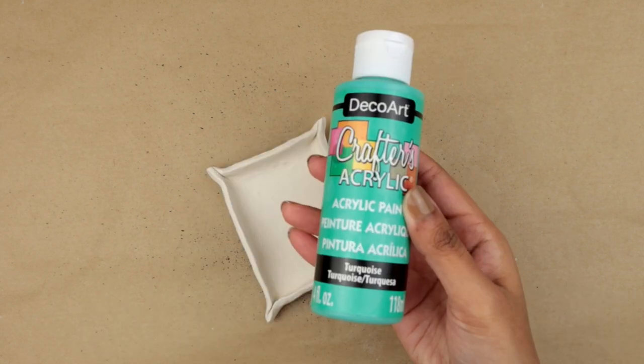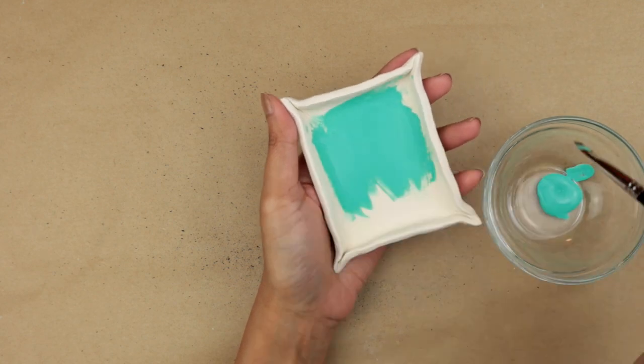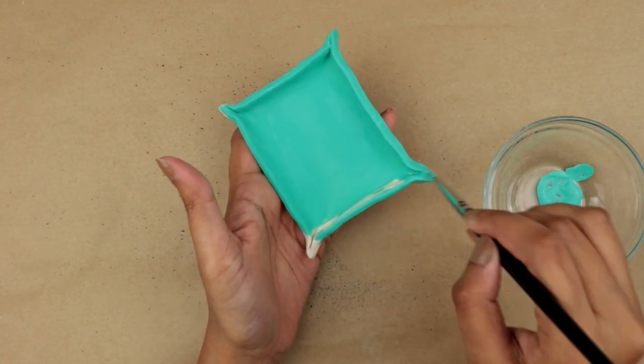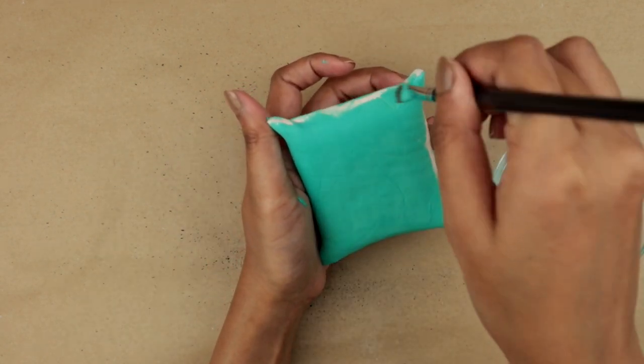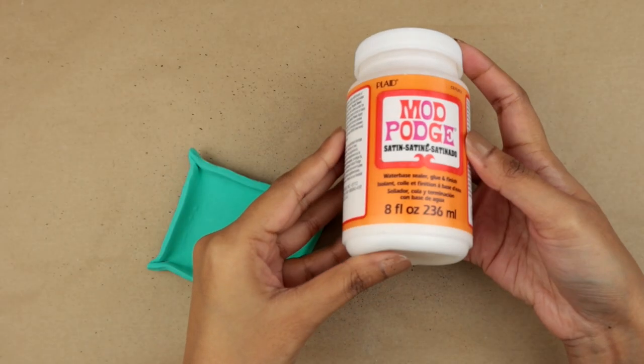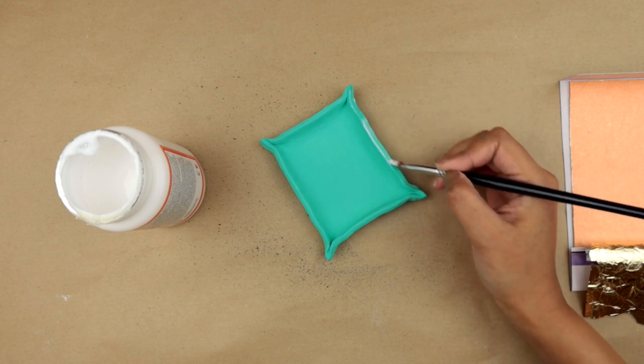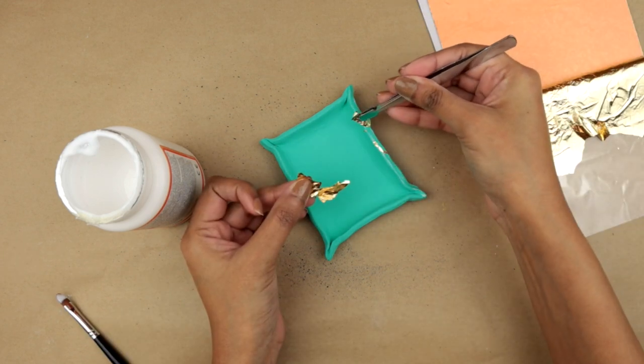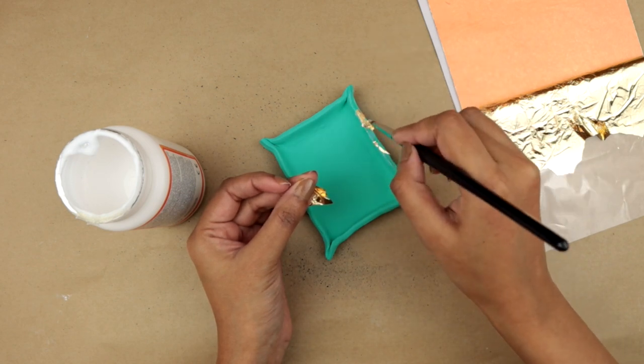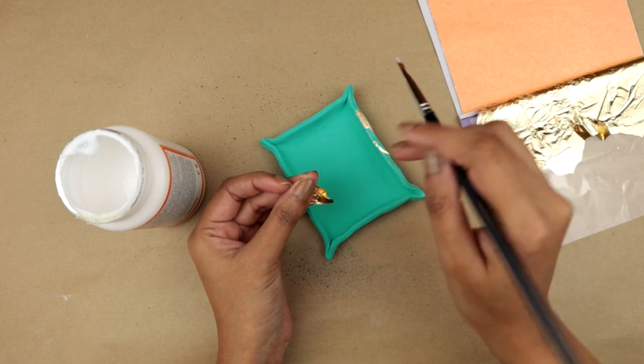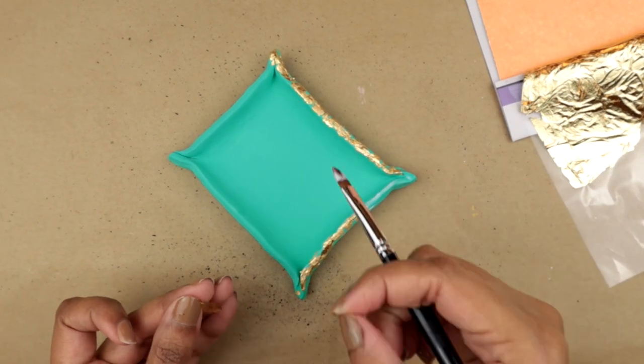I am grabbing the next piece and first I am going to paint it with this turquoise acrylic color. I went for a single coat and then I'm flipping it over and painting the back of it. After the paint dried down, I am grabbing my Mod Podge and some gold leaf. Now I'm going to apply the Mod Podge on the edges of the dish and then I am tearing the gold leaf into small pieces and placing them where I applied the Mod Podge. Then I'm going back in with a brush dipped in Mod Podge to secure it.